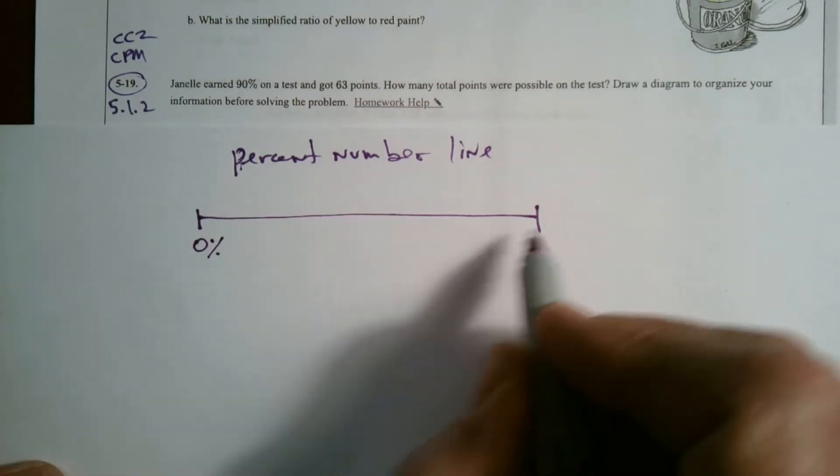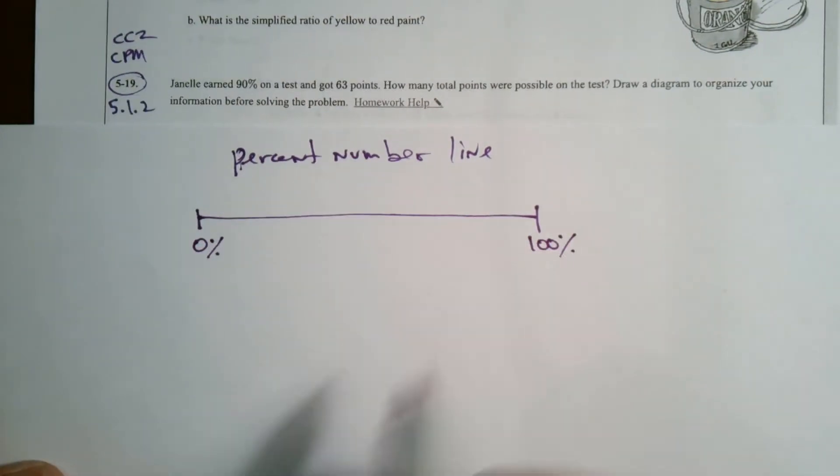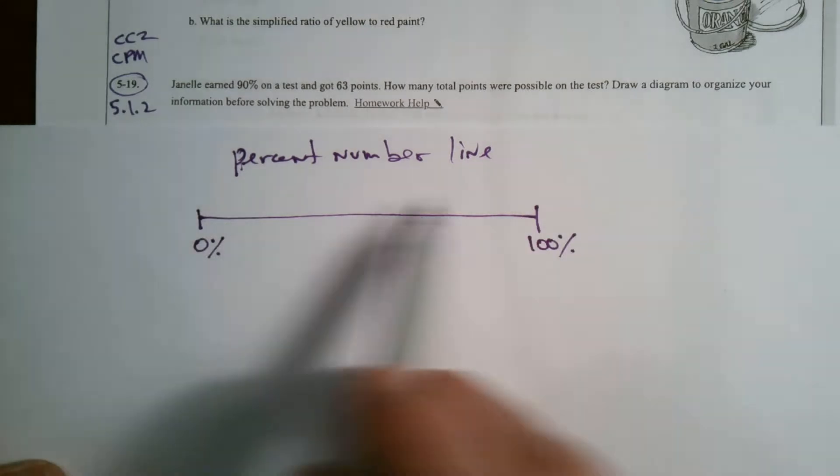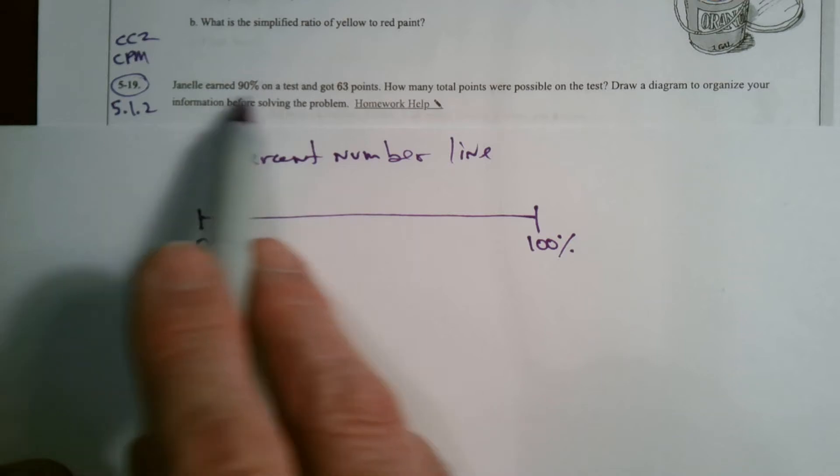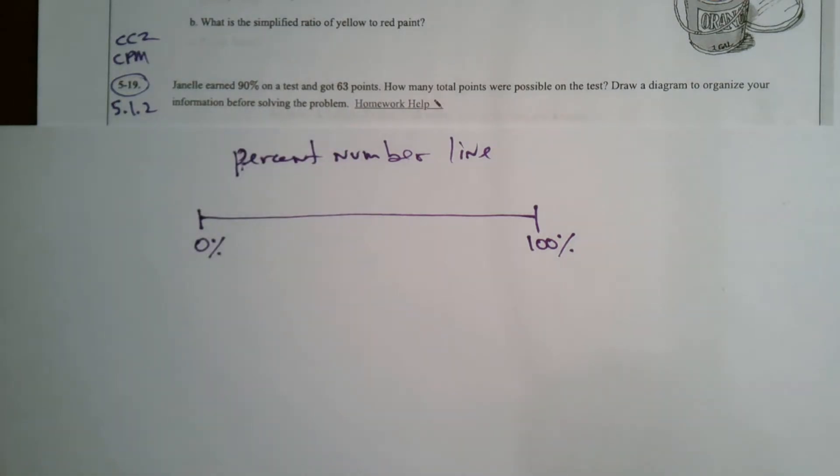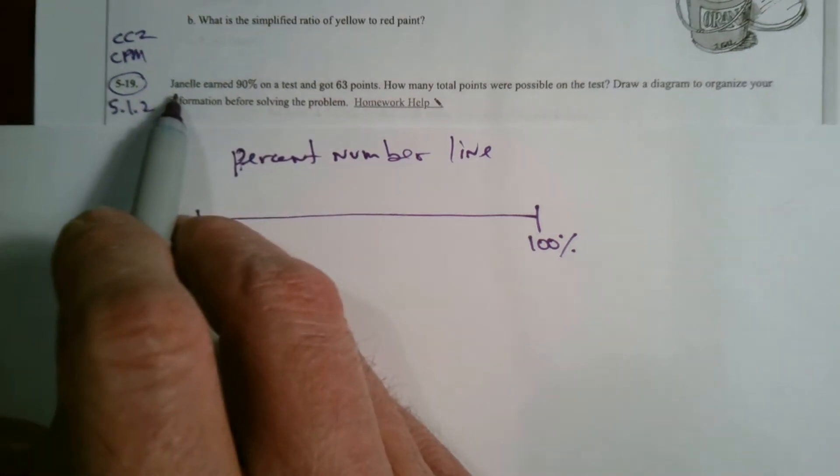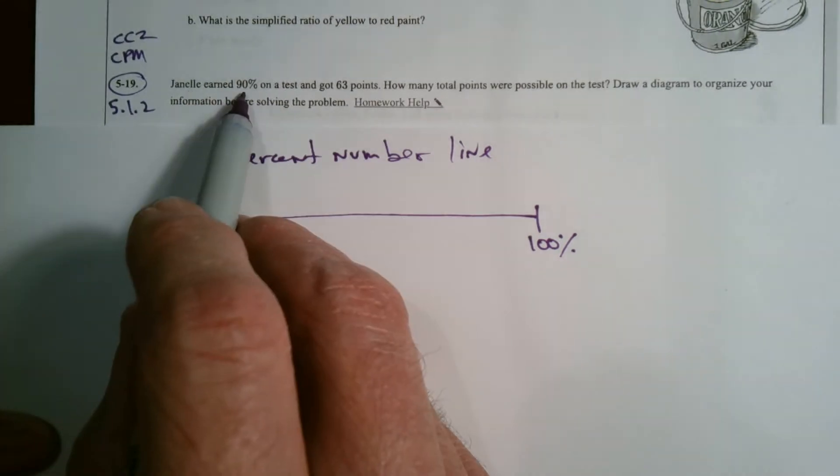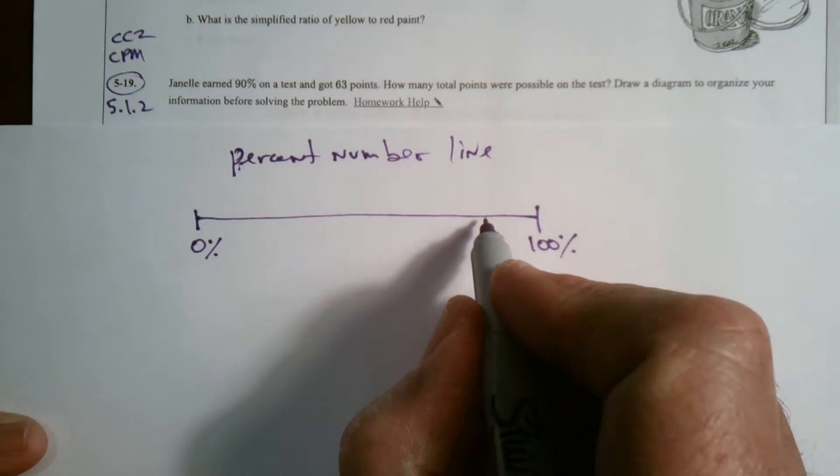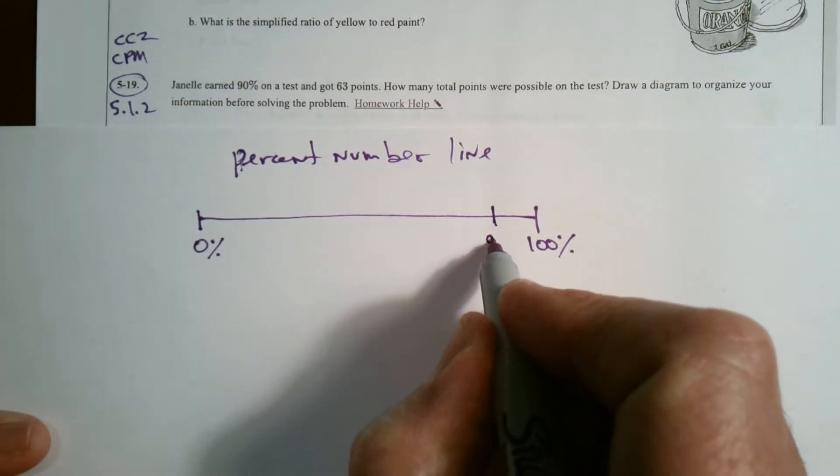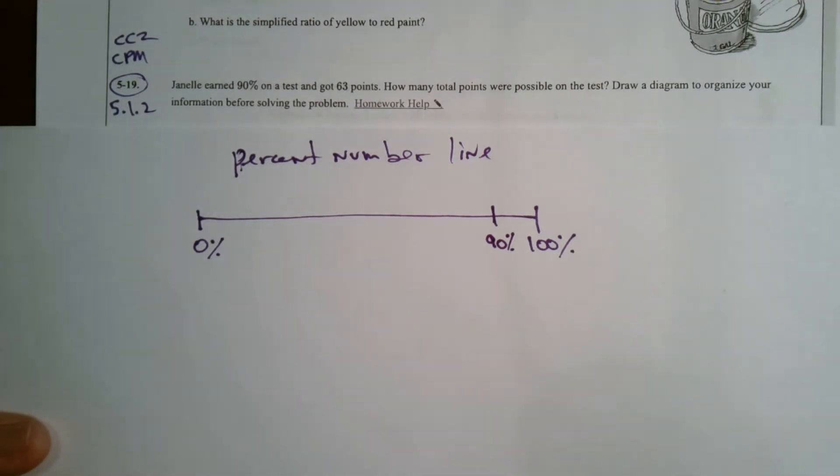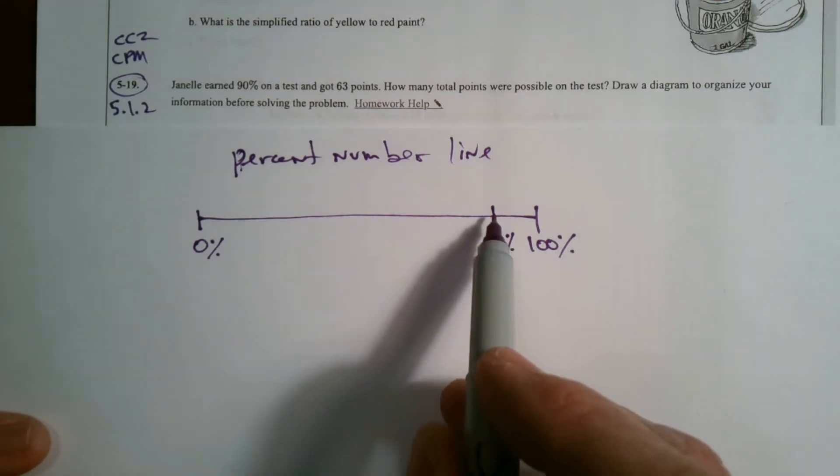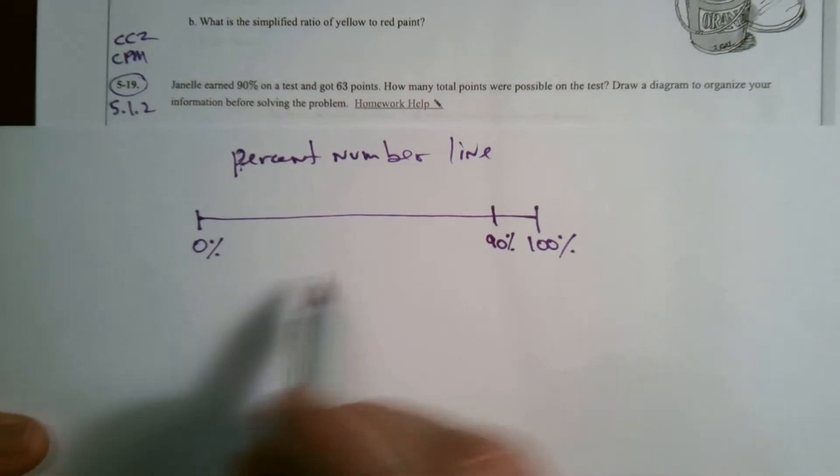So I know I can start with 0% to 100%. And then what's nice is I need to kind of cut this up evenly because that helps me find those percents as well as deals with what the information I have. So I am given 90%. They're telling me 90% on the test was 63 points. So 90% would be right about here, right? Do you agree? From here to here, 90%. So that tells me it would be nice to figure out if I can cut this up into 10%, right?